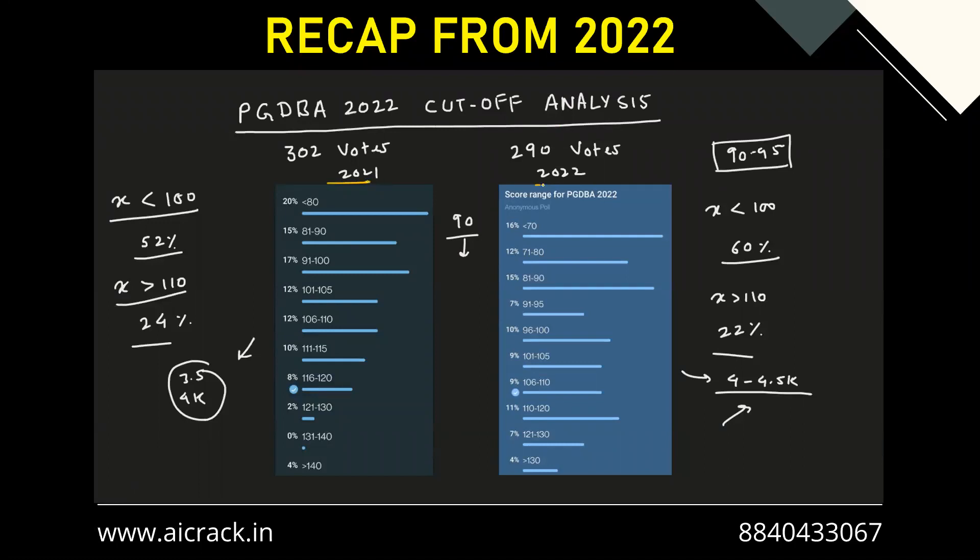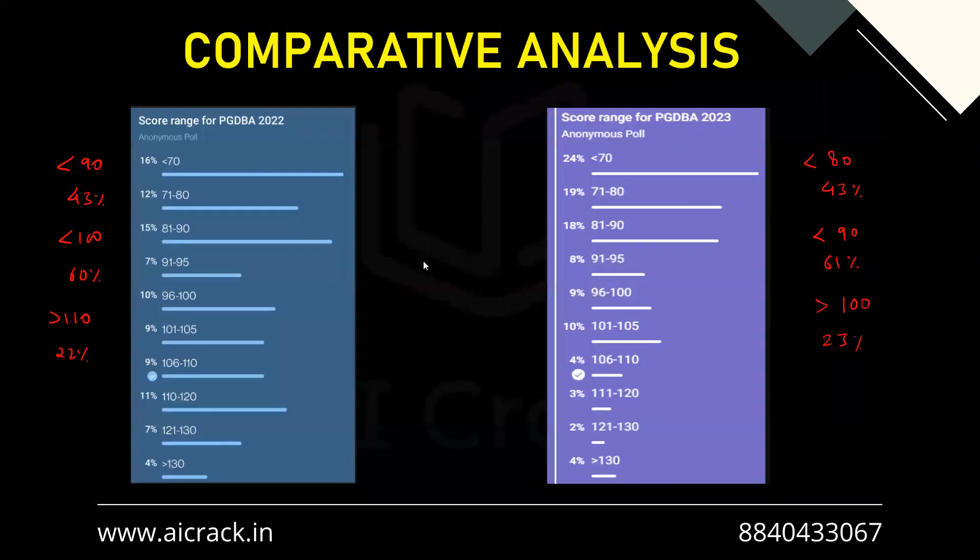We had polls from both 21 and 22, and we had participant numbers from both years. We made a comparative analysis between both polls and found that cutoff is likely to stay in the same range. That's what we concluded back in 22. Now let's do a similar analysis for 22 and 23.